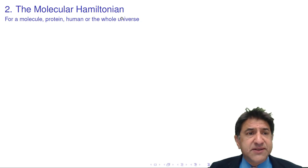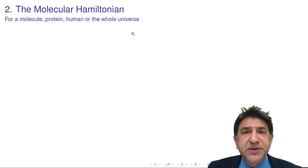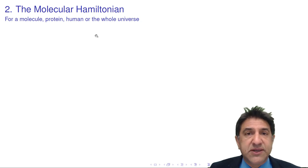In this lecture I'm going to talk about the molecular Hamiltonian. We saw that the time-dependent Schrodinger equation involves a Hamiltonian and we know the rules of making that Hamiltonian. Essentially we have to replace the momentum by minus ih grad. But what does this Hamiltonian look like for a molecule, or indeed a protein, or a human, or the whole universe?